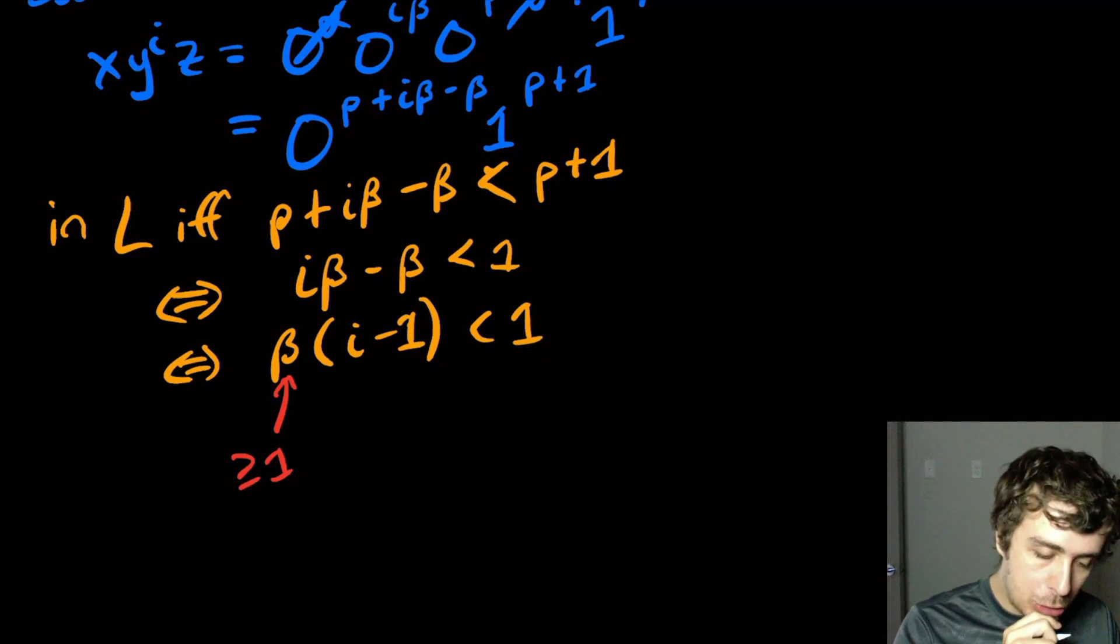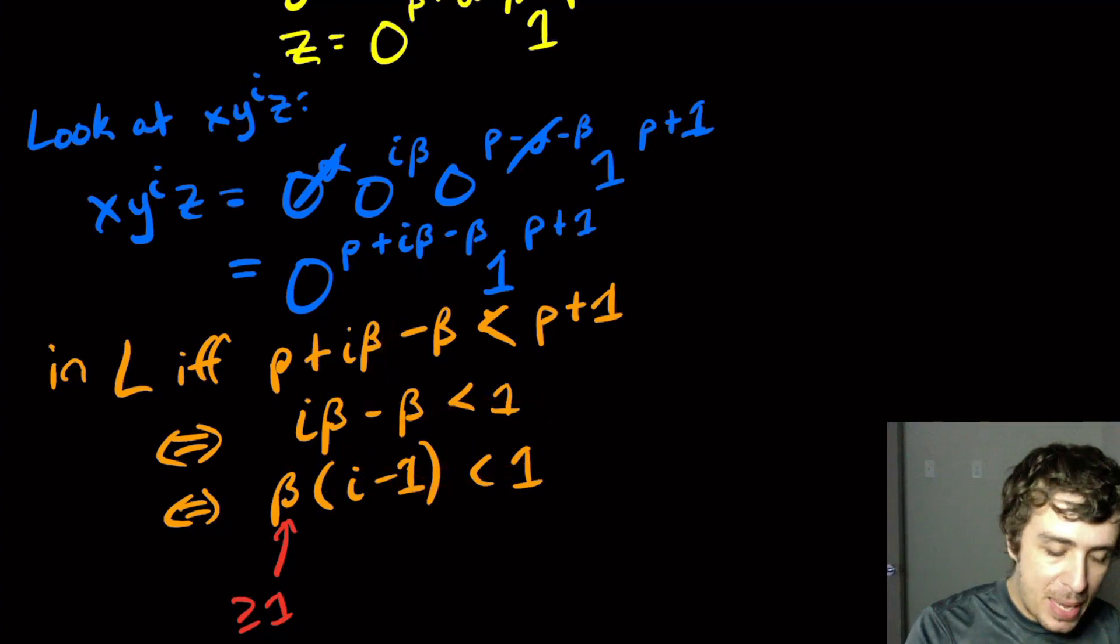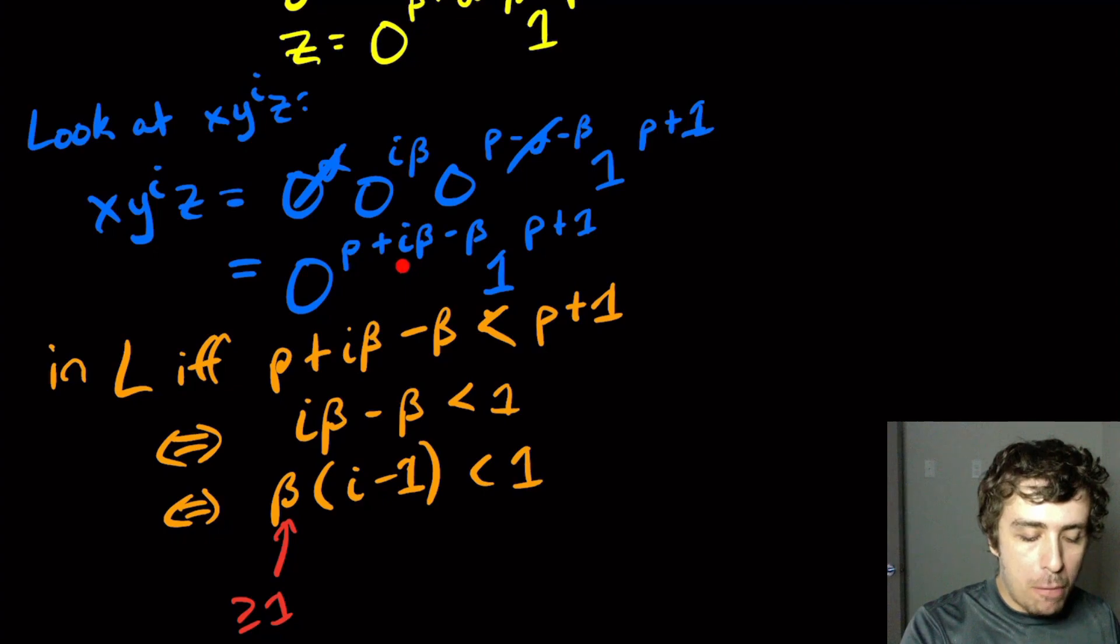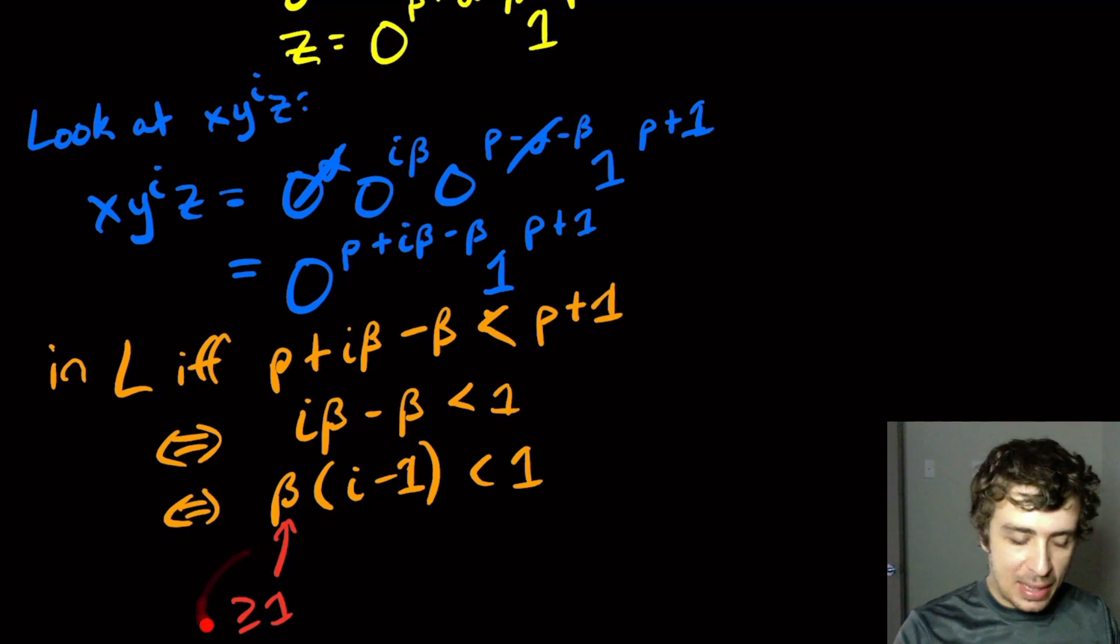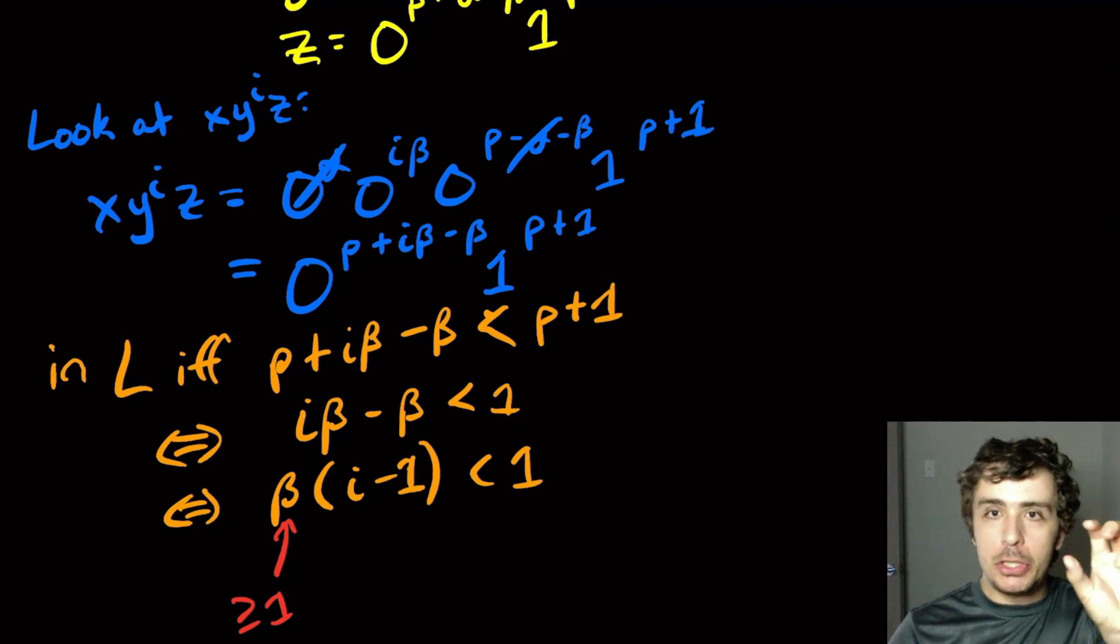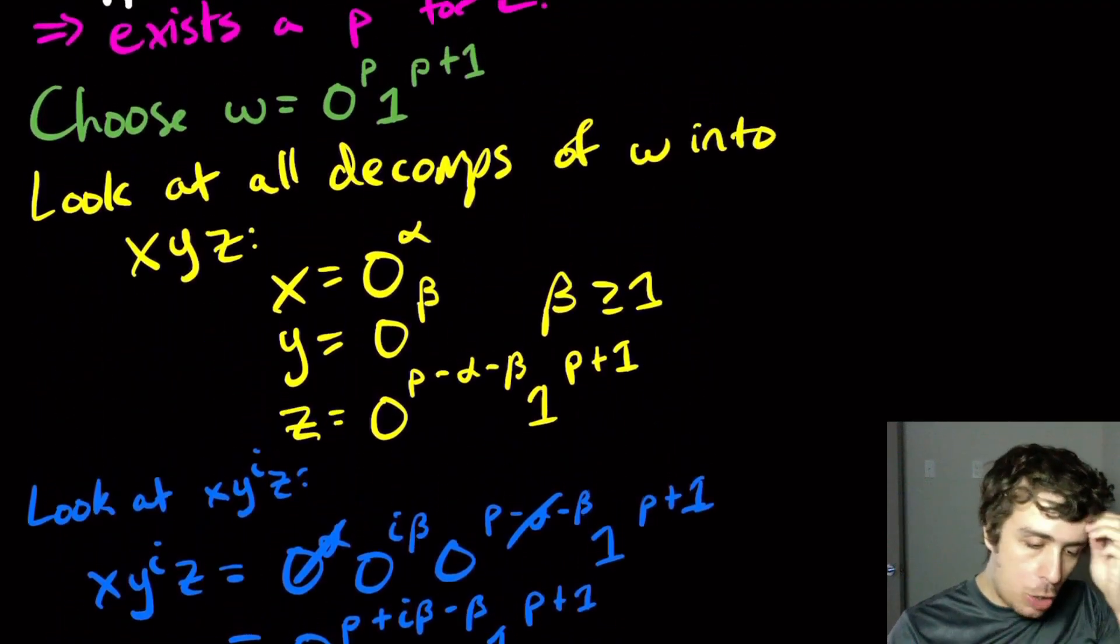So, but if we pick I equal to 2, then let's see. So that's 1 here times 1. So then let's try to investigate what the string actually is. So if we look at what the string actually is, so the inequality is false and we're done. But let's just actually see why. Well, if we pick I equal to 2, we have 1 beta right here. And so we would have P plus beta. There's 1 beta here. And then P plus 1. So we don't know what beta actually is. But we know that it's at least 1. So that means that the number of zeros is at least as many as the number of ones. It might be more than the number of ones. But it cannot be strictly less.